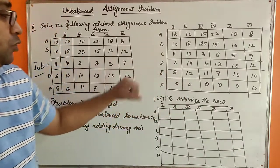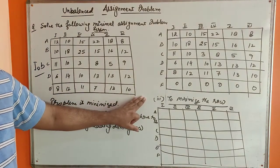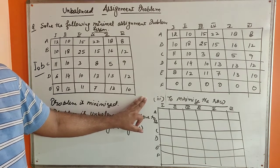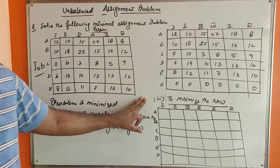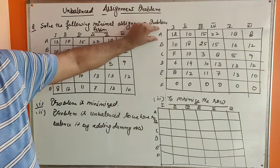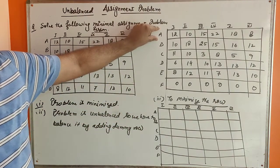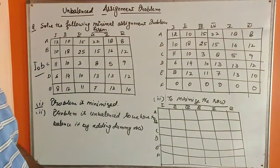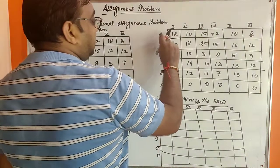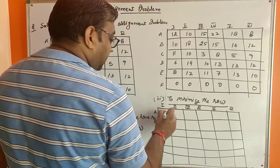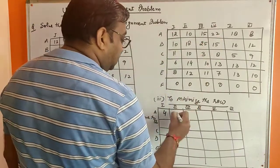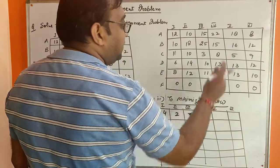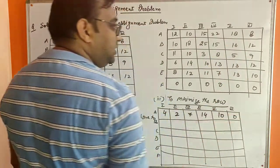Now we move to the next step: minimize the rows by subtracting the minimum element from each row. In the very first row, the minimum element is 8. Subtracting 8 from all elements: 12−8=4, 10−8=2, 15−8=7, 22−8=14, 18−8=10, and 8−8=0.